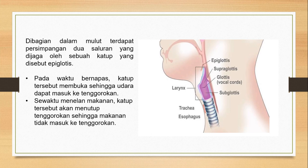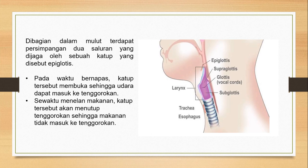Di bagian dalam mulut terdapat persimpangan dua saluran yang dijaga oleh sebuah katup yang disebut dengan epiglottis. Katup epiglottis ini memisahkan antara tenggorokan dengan kerongkongan. Pada waktu bernapas katup tersebut akan membuka sehingga udara dapat masuk ke tenggorokan, sedangkan pada saat menelan makanan katup epiglottis tersebut akan menutup sehingga makanan tidak masuk ke tenggorokan. Inilah mengapa ketika makan dilarang sambil berbicara, karena katup epiglottis akan membuka tenggorokan sehingga memungkinkan makanan masuk ke tenggorokan dan menyebabkan seseorang menjadi tersedak, bahkan makanan dapat keluar melalui hidung.